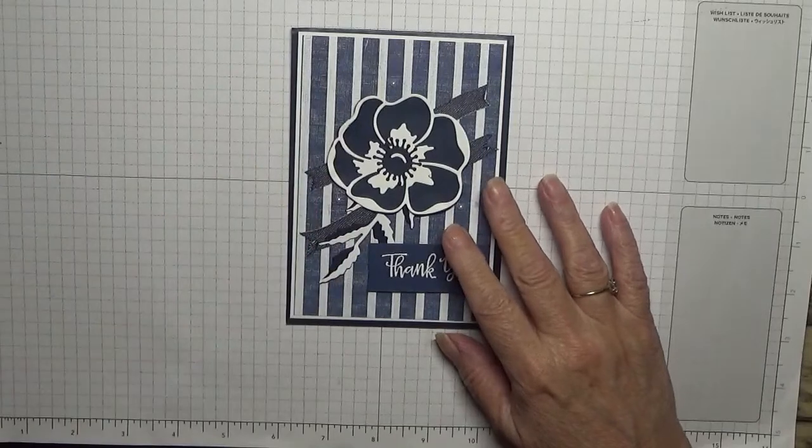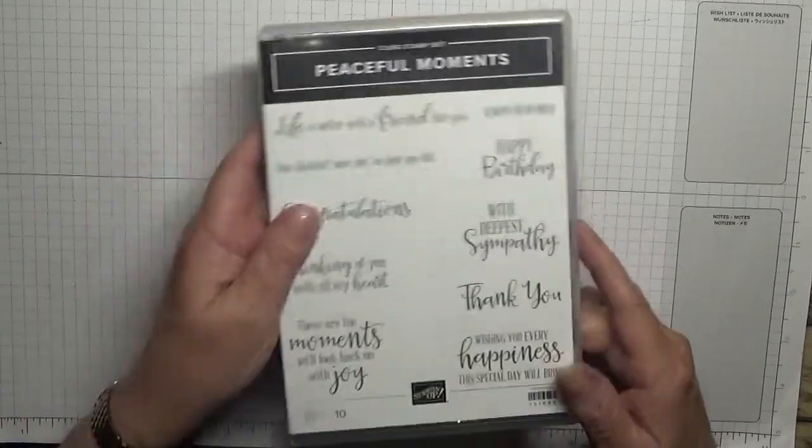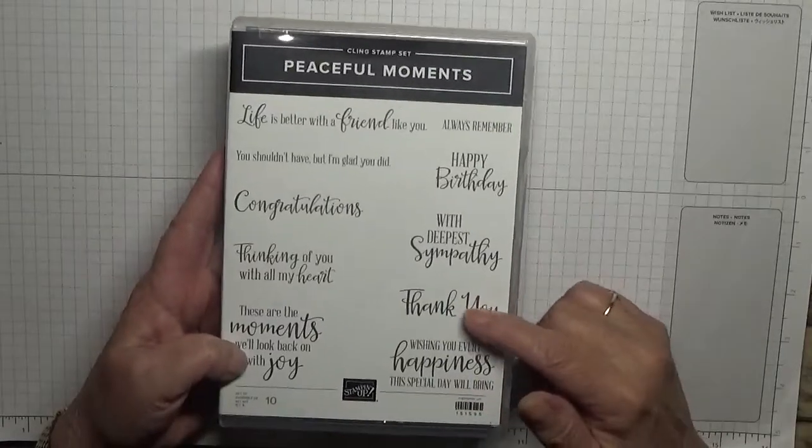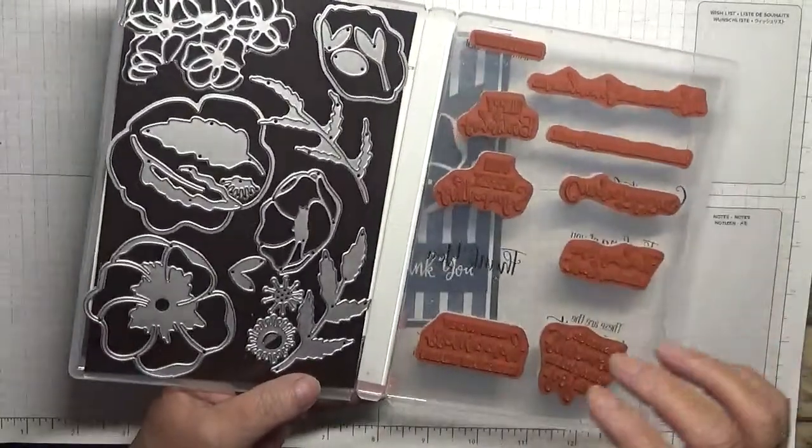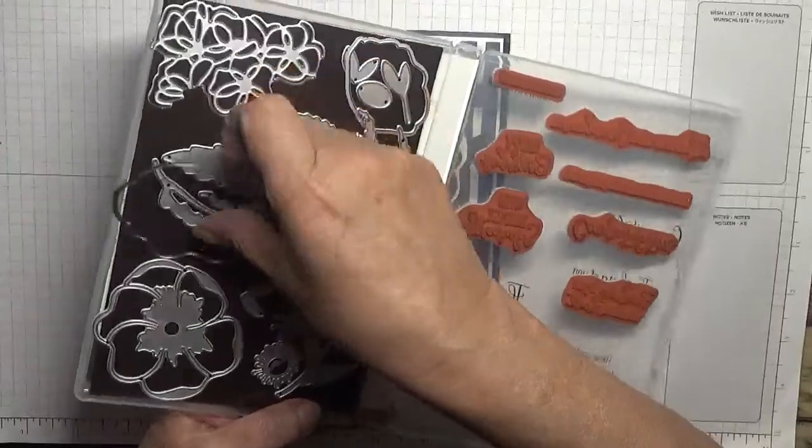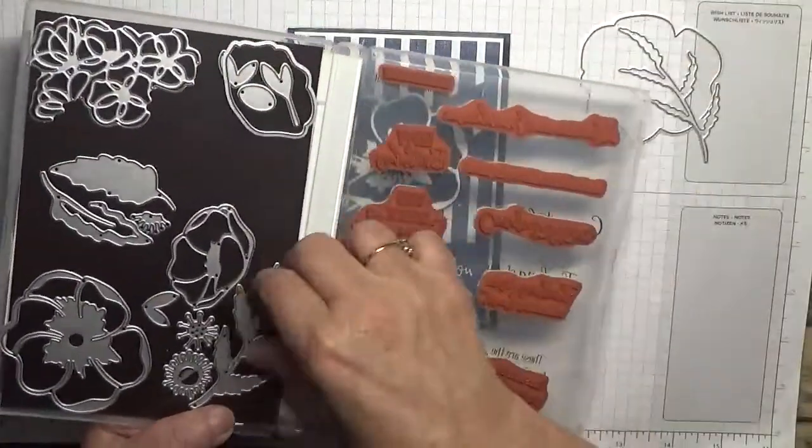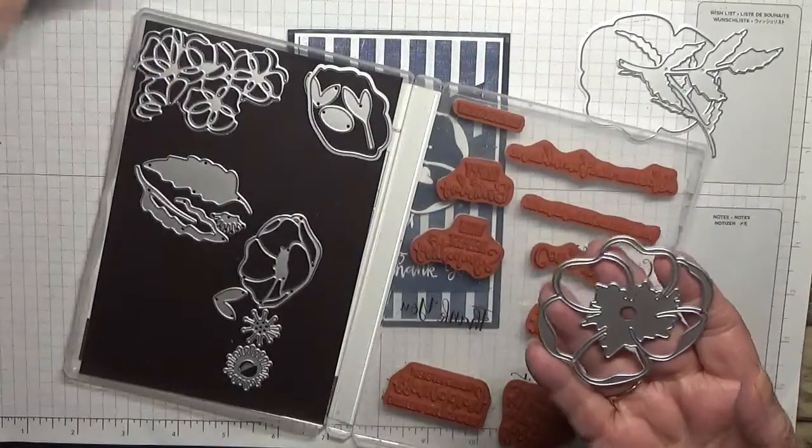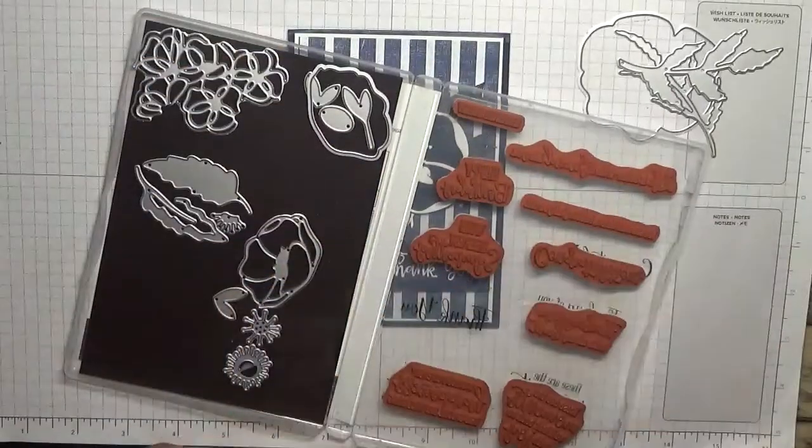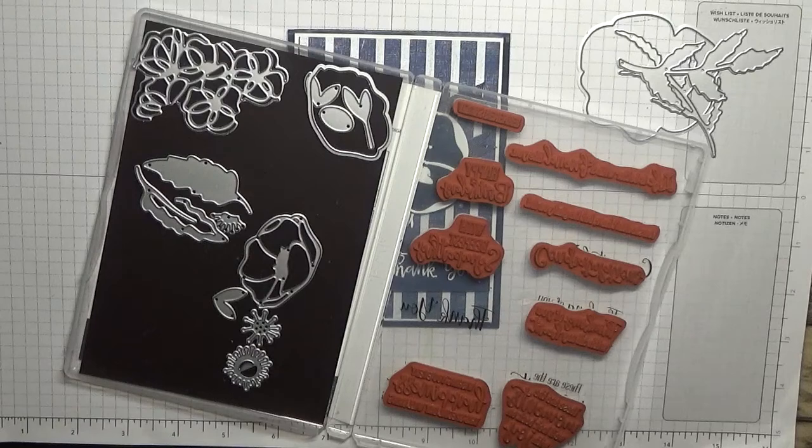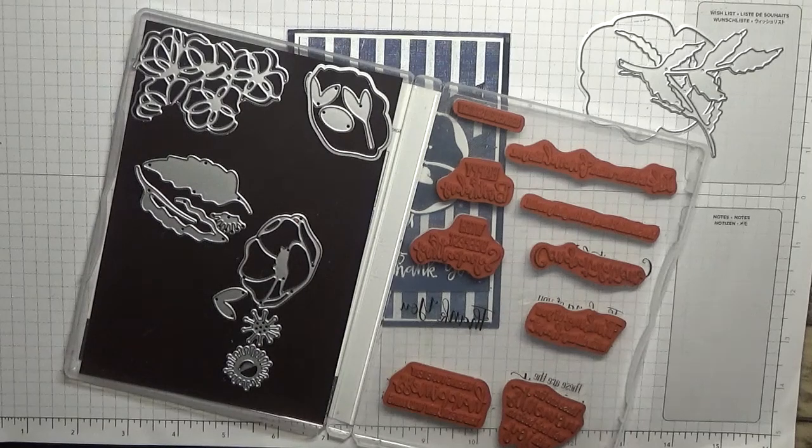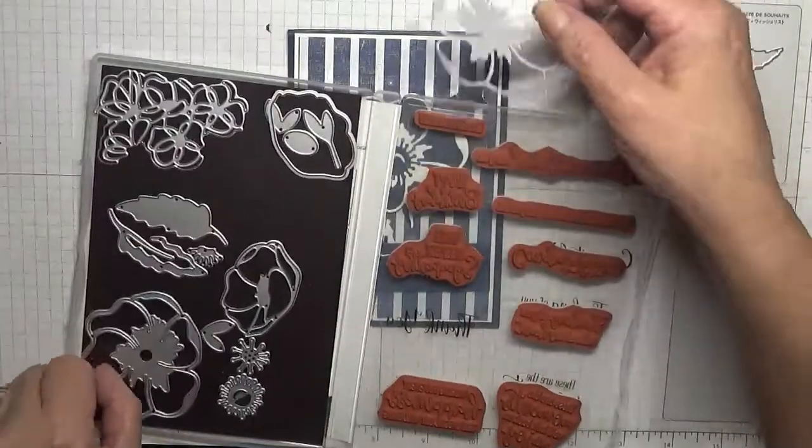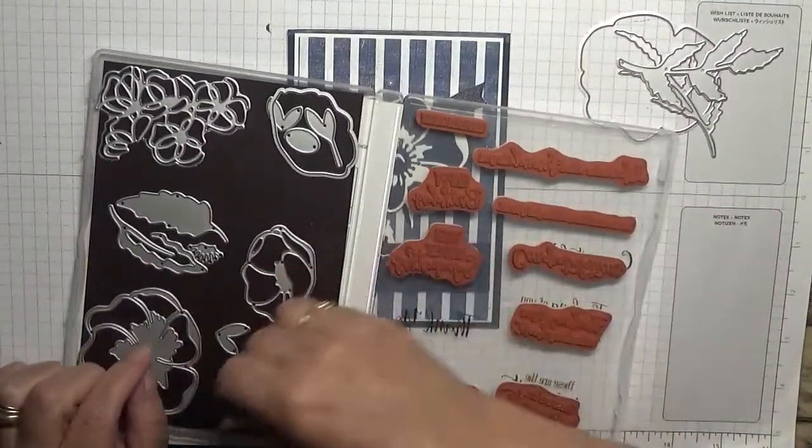To make this card I have used Peaceful Moment stamp set and I'm going to be using thank you and also these dies. Now I do need that one, that one, and that one. I've already cut out this bit, the white bit which is here, was here, throw it on the floor so I don't need that one and that one.